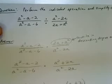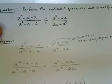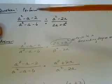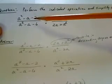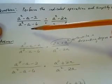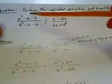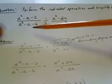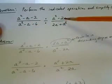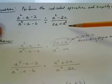The question says to perform the indicated operation and simplify it completely. In the first expression we have a squared minus a minus 2, all over a squared minus a minus 6. We're taking that rational expression and dividing by a squared minus 2a, all over 2a plus a squared.